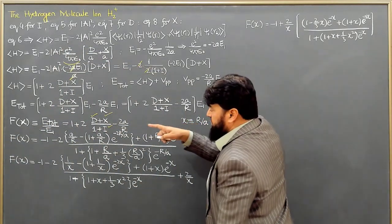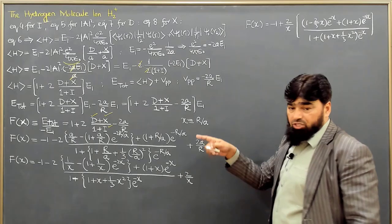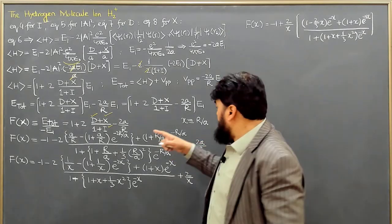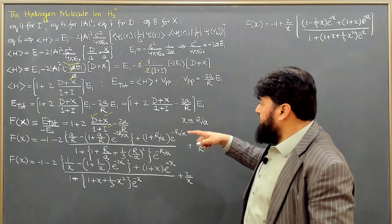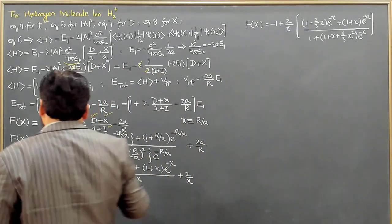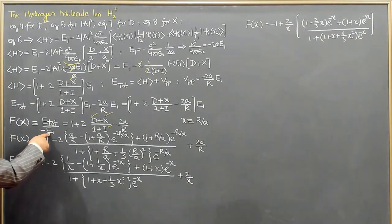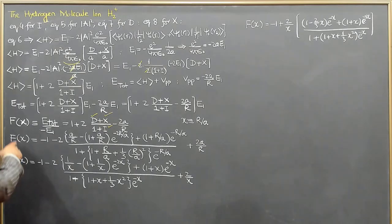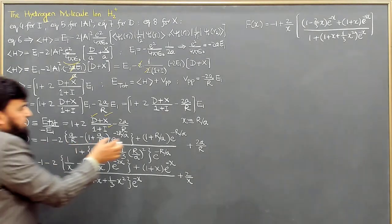f of x is basically the normalized energy, because f of x is equal to the E total divided by E1. So it is in the units of this one. So we can plot this f of x with respect to x.